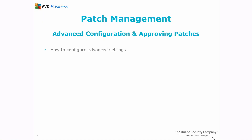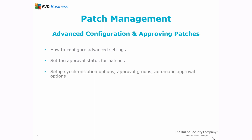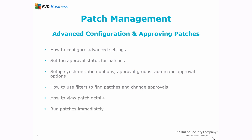In this lesson, you'll learn how to configure advanced settings and approve patches within Managed Workplace. We'll begin by showing how to set up synchronization options, approval groups, and automatic approval options. Then you'll learn how to use filters to quickly and easily find patches that you want to change approvals on. We'll also cover how to view patch details, run patches immediately, and generate the patch status and manage device reports.